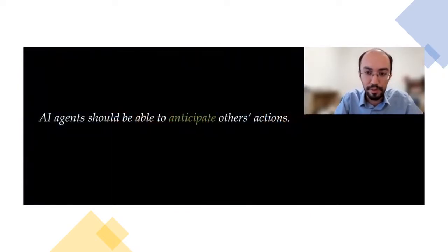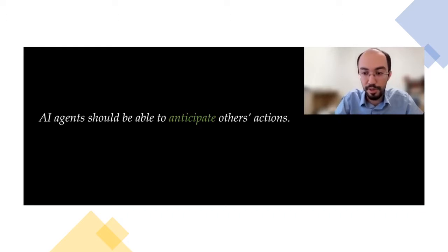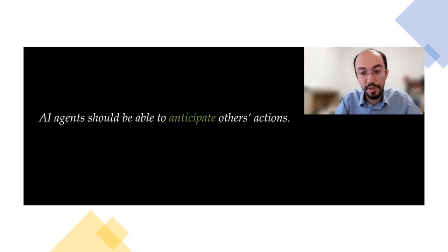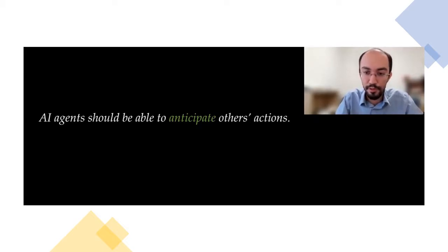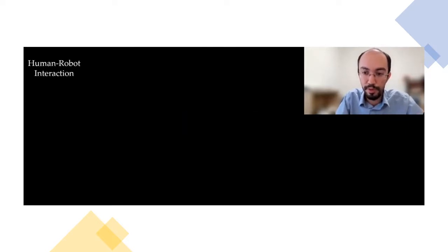In my research, my goal is to enable AI agents to achieve this opponent or partner modeling. The agents must be able to anticipate other agents' actions so that they will better optimize their policies. For this, we need algorithms that can learn the objectives of the agents. To achieve this, I focus on three fields. First, I study human-robot interaction, because if we want robots to effectively help or collaborate with humans, we need them to learn humans' objectives.